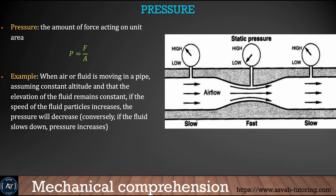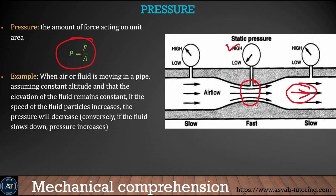Next is pressure — and the important Bernoulli's equation. Pressure equals force per unit area. When air flows through a pipe and the pipe diameter becomes smaller, the velocity of the air is high at that narrow point. When the pipe widens again, velocity is low.